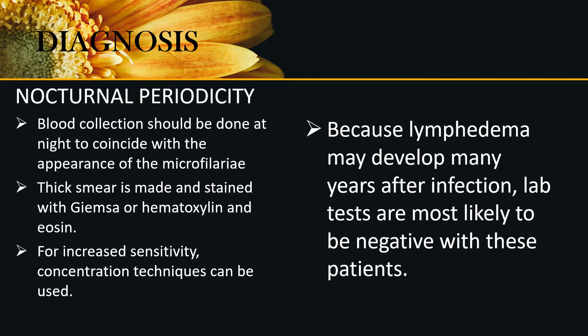Filariasis demonstrates nocturnal periodicity, so blood collection should be done at night to coincide with the appearance of the microfilariae. Thick smears are made and stained with Giemsa or hematoxylin and eosin to show the filariasis. For increased sensitivity, concentration techniques can be used. Because lymphedema develops many years after infection, lab tests are most likely to be negative in these patients.